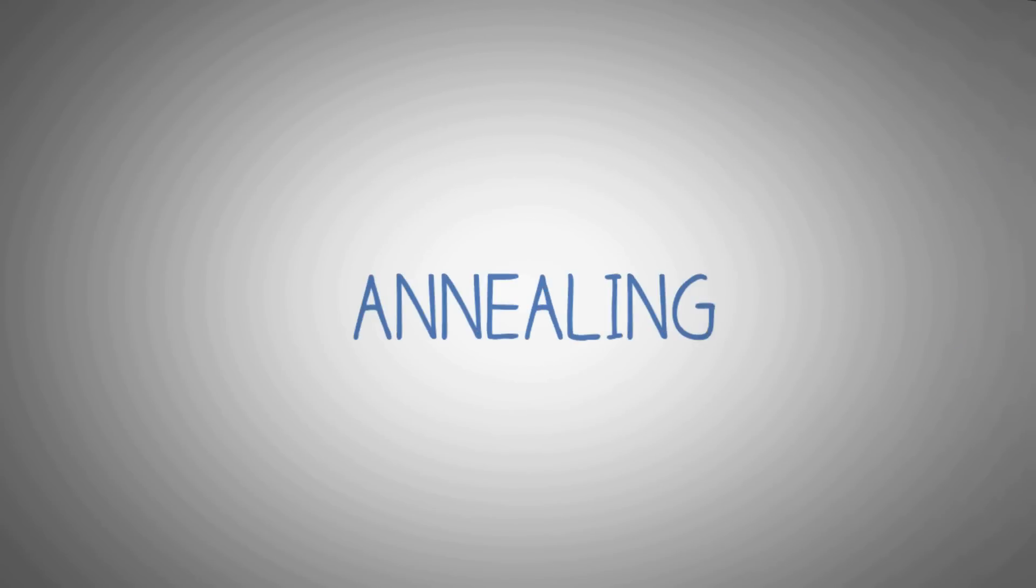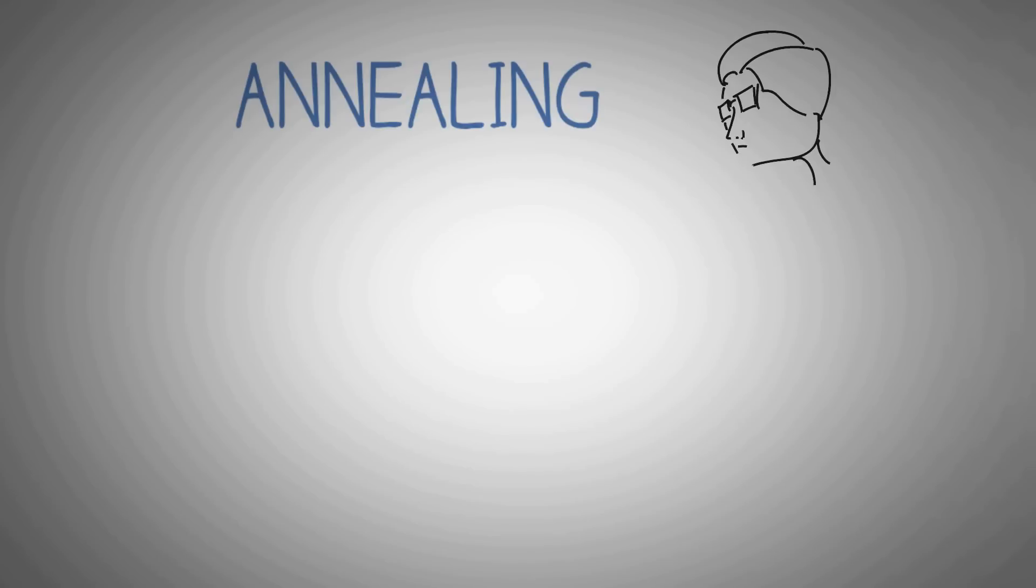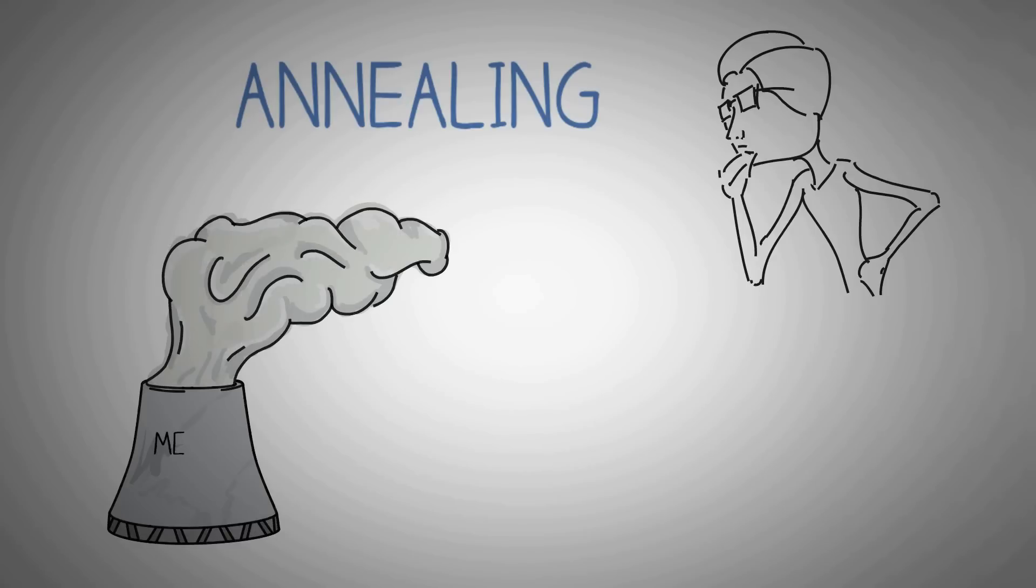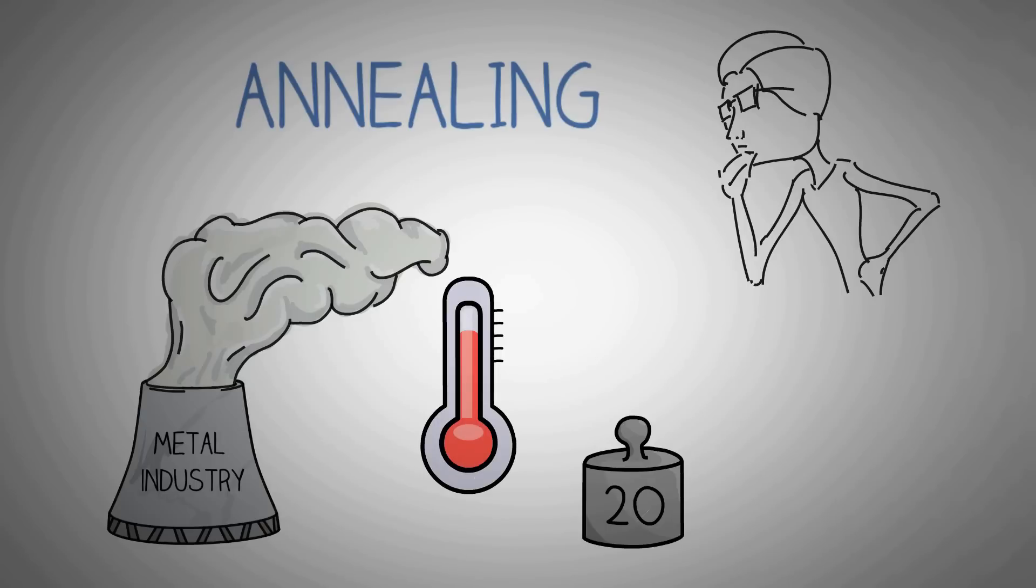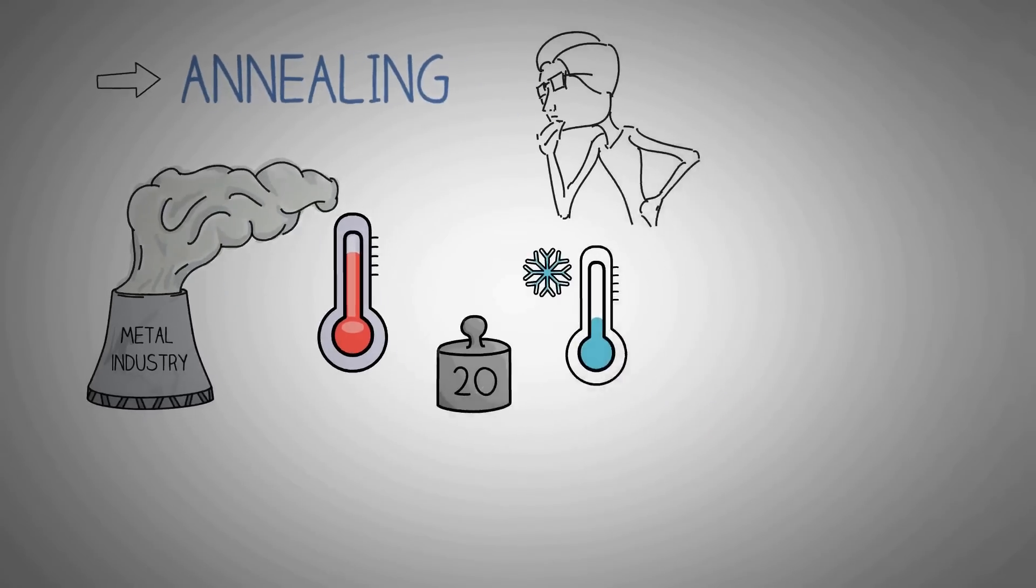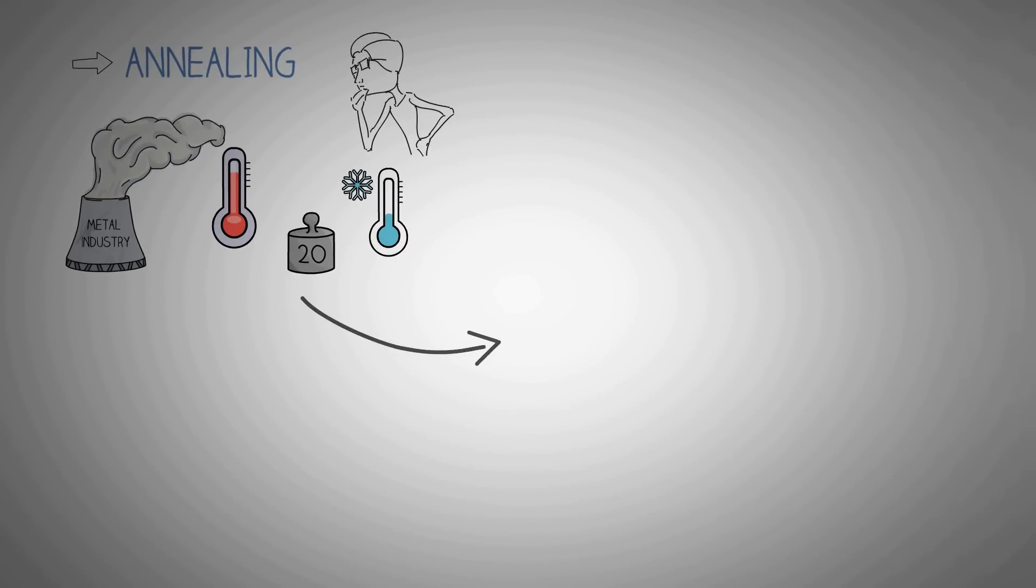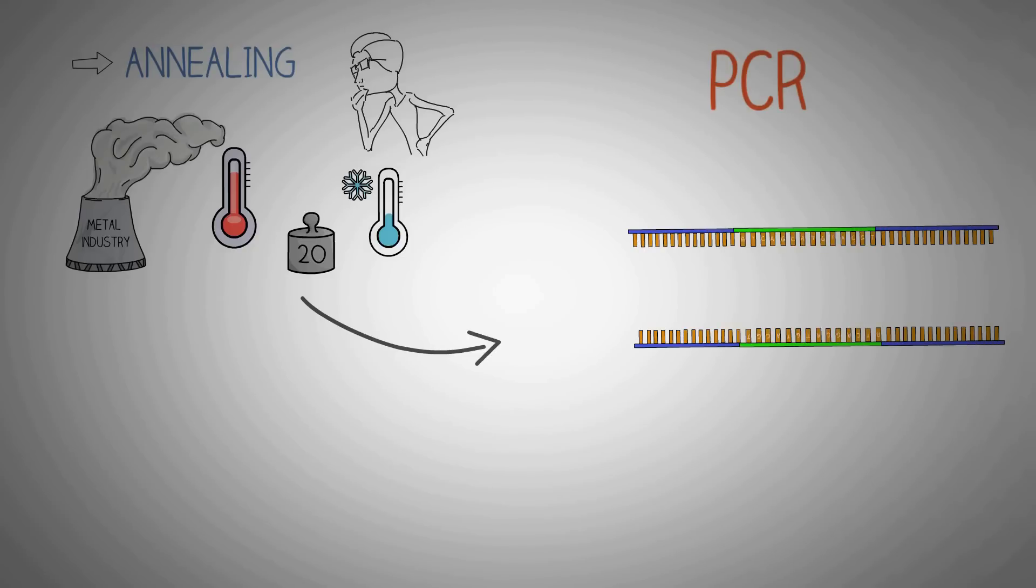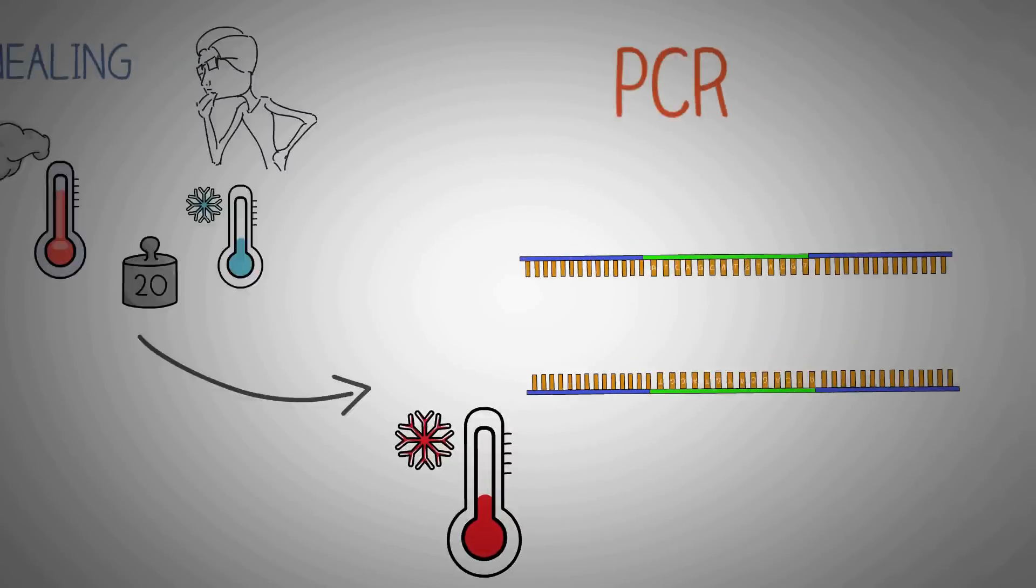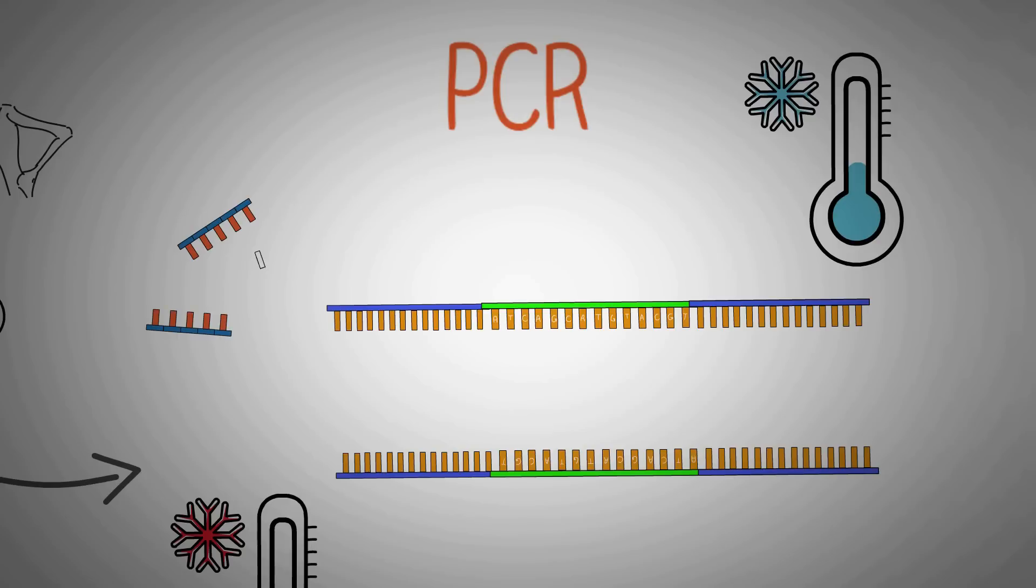The next step of PCR is known as annealing. Basically this word was used in the metal industry where they heat a certain metal to a higher temperature and then cool it. This process is called annealing, which is basically done to remove the internal defects from the metal. Same is the case here in PCR, where we first raise the temperature of the machine to 72 degrees for step one, that is denaturation, and then we cool the temperature to 55 degrees so that the primers in the PCR tube can bind to their target sequence on the single-stranded DNA.